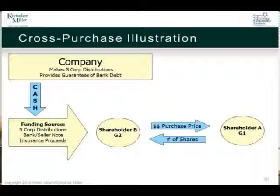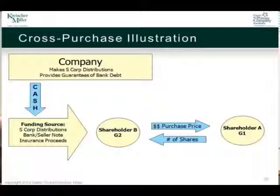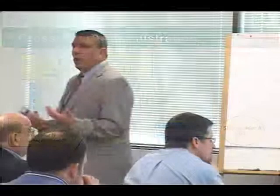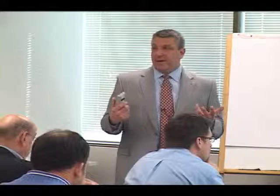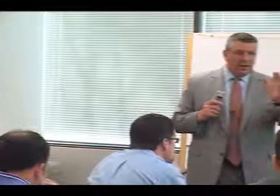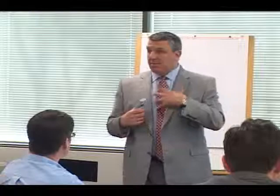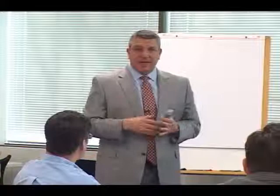Shareholder one exchanges shares in exchange for some consideration with shareholder two. Let's say no money changes hands up front. Shareholder two gives shareholder one a note for $4 million as an example — that's the value they've agreed upon for the transfer. So Frank and I are 50% partners and my half is worth $4 million. Frank gives me a note for $4 million and I give him my shares. After that, Frank is the 100% shareholder. Step one is we have to exchange something first to move the shares.